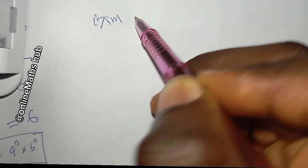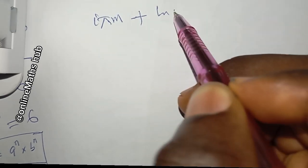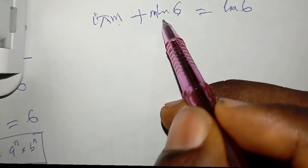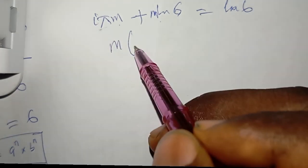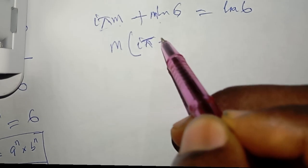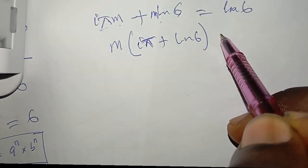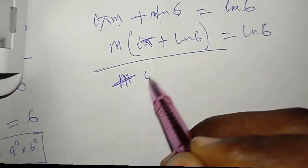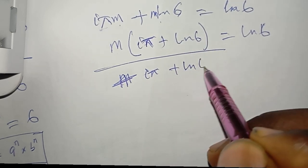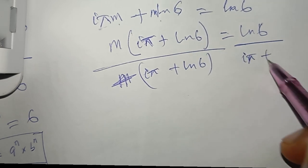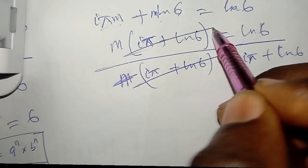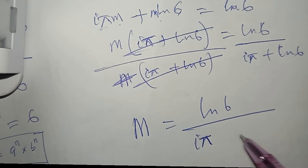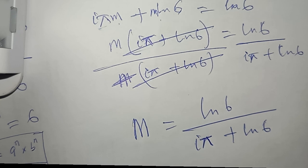So I have i·π·m plus m·ln(6) equal to ln(6). Since m is common, I factorize: m times (i·π + ln(6)) equals ln(6). Dividing both sides by (i·π + ln(6)), I get m equal to ln(6) divided by (i·π + ln(6)). This is the value of m that satisfies the equation.